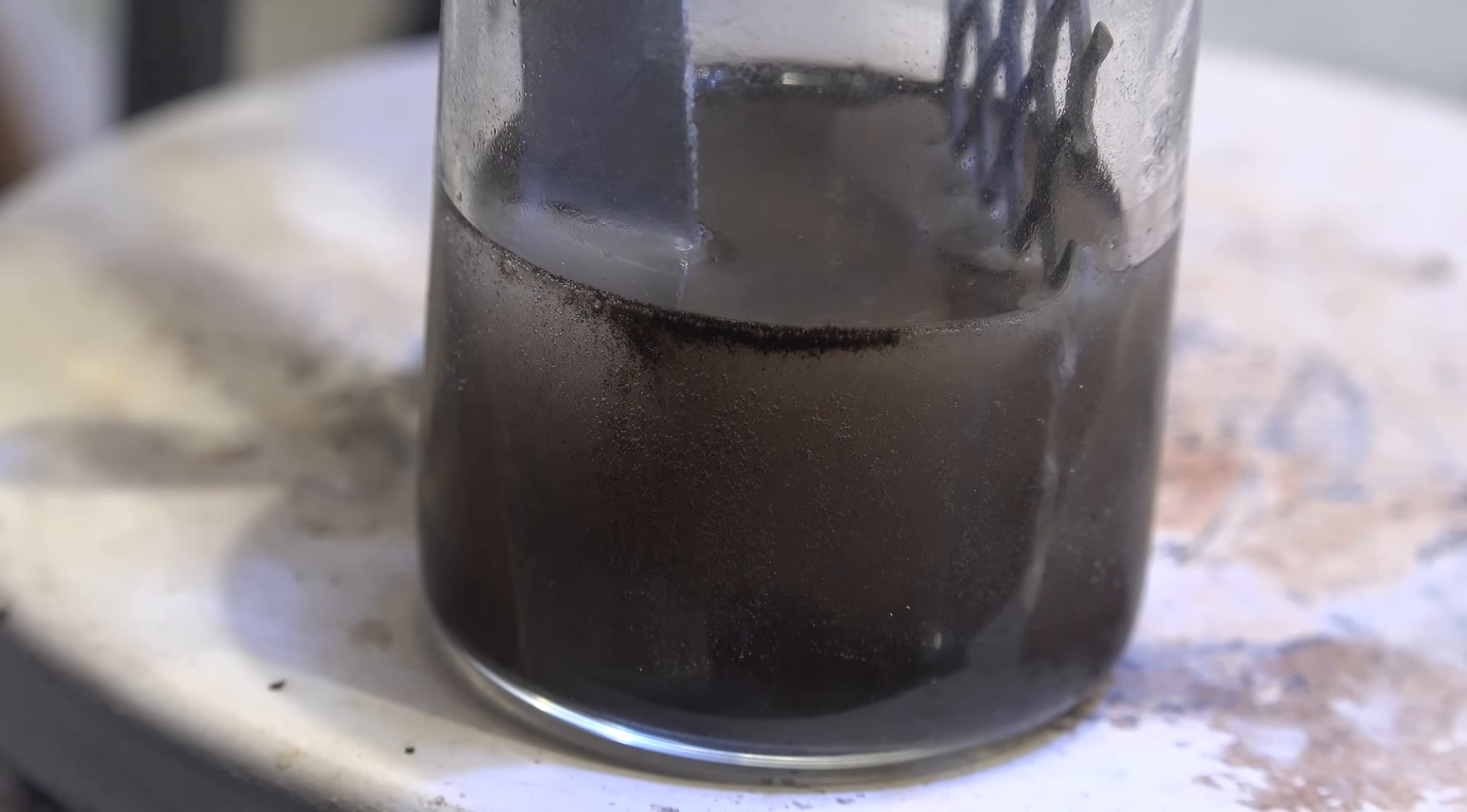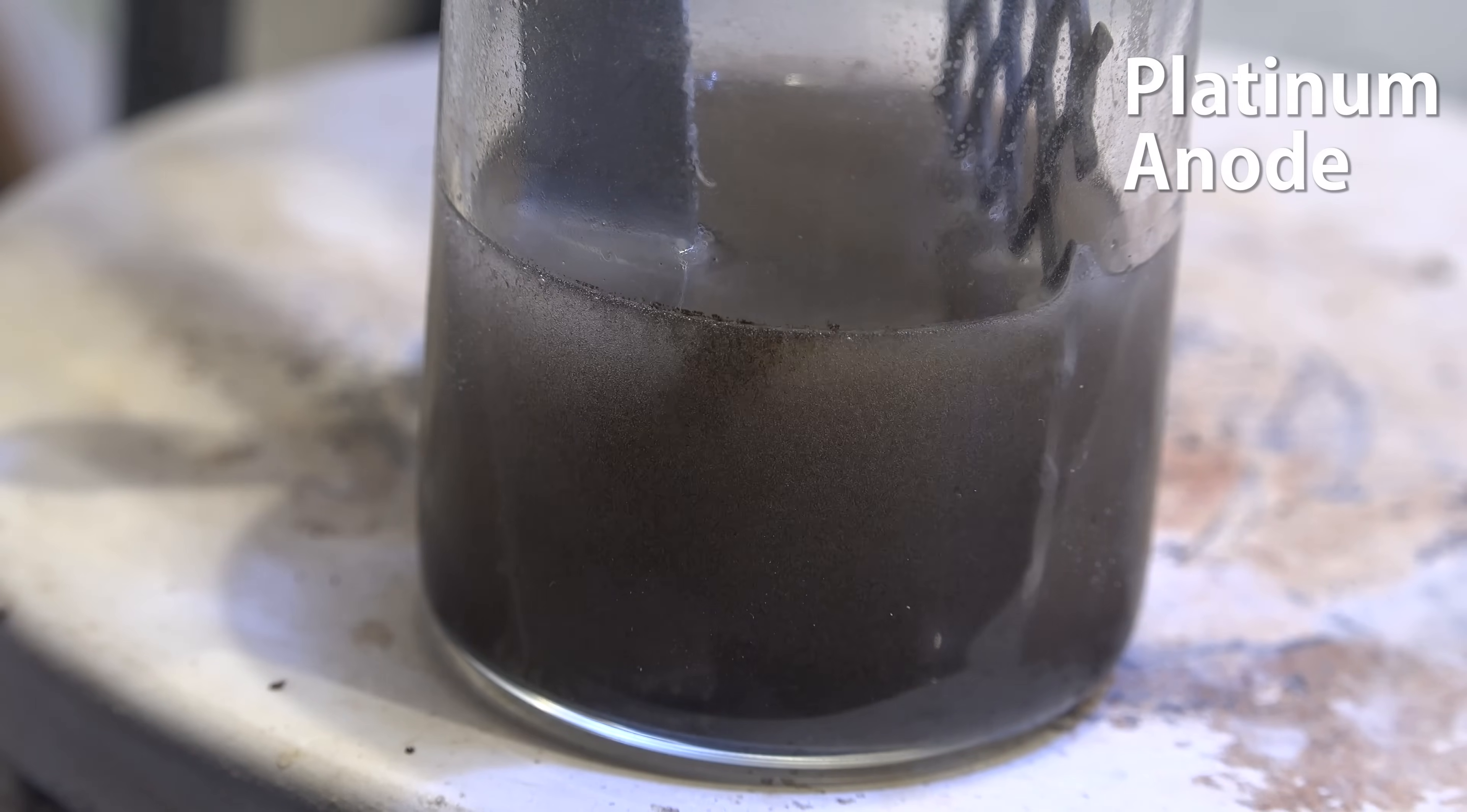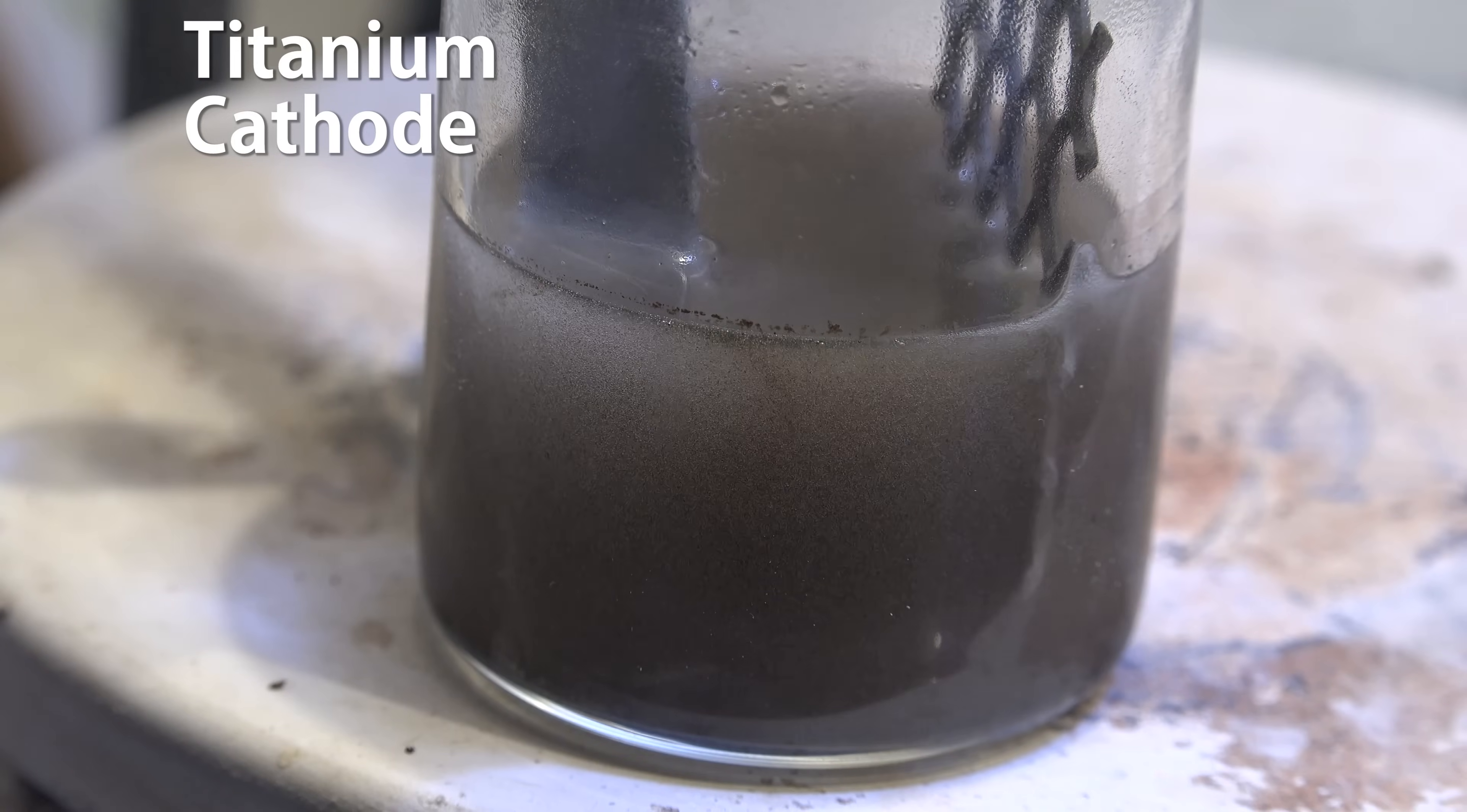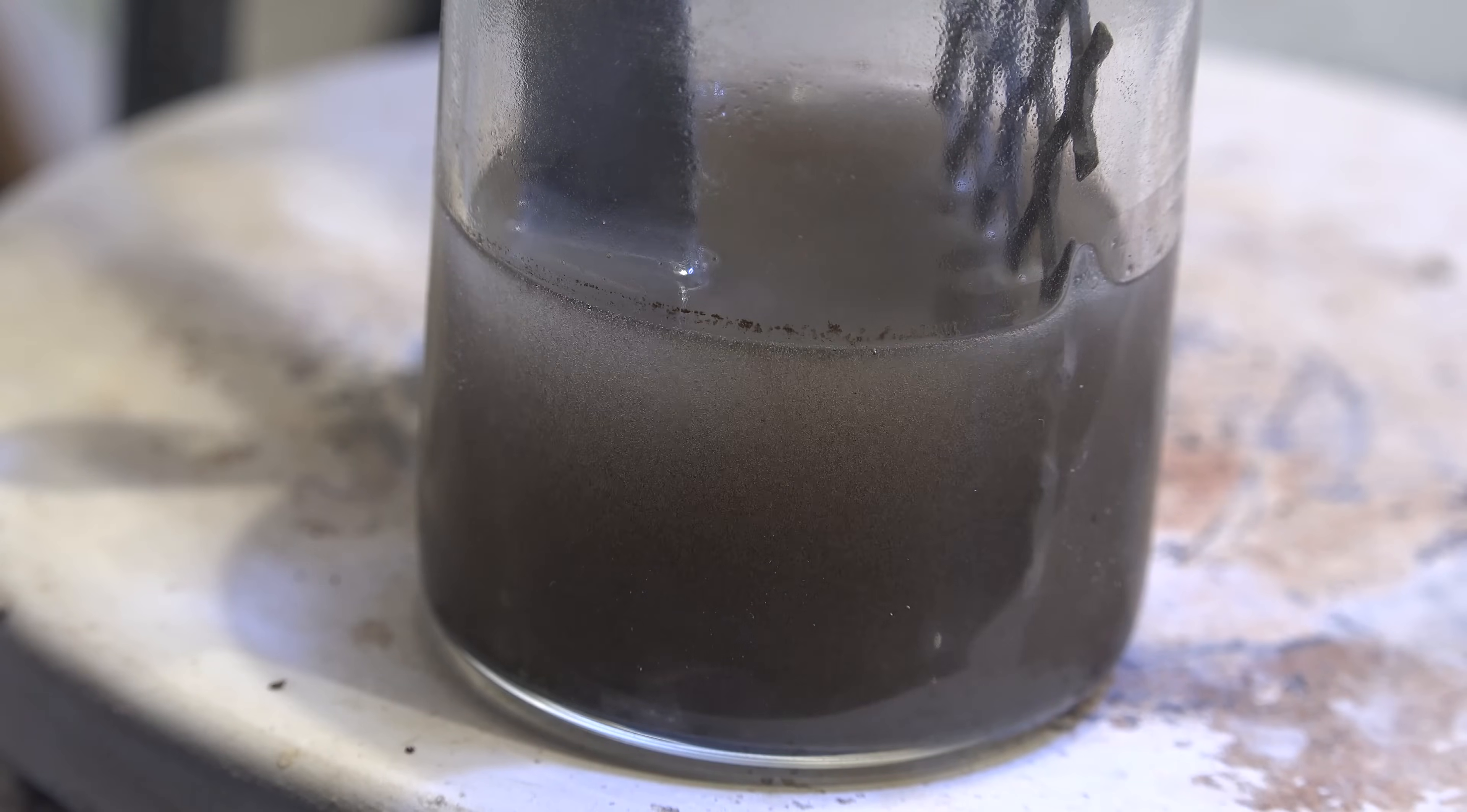Now to recover the actual gallium metal we set up for electrolysis. On the right over here is a platinum anode. You can also use nickel since we're working in strongly alkaline conditions. On the left here is a titanium cathode. But you can also use copper, nickel, steel and most other metals that are stable in alkaline conditions.